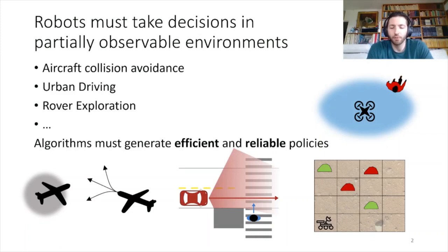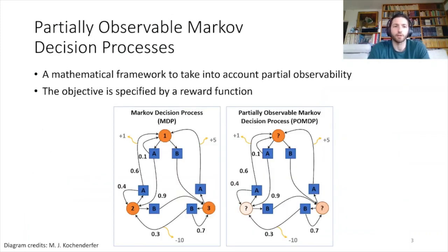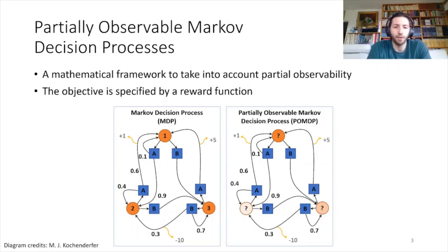A framework of choice to generate those policies is a Markov decision process. It's a mathematical framework where an agent in a given state can take several actions. When the agent takes an action, here A or B, it will transition to a new state and get a reward. The goal of an algorithm is to find the sequence of actions that leads to the maximum accumulated reward.